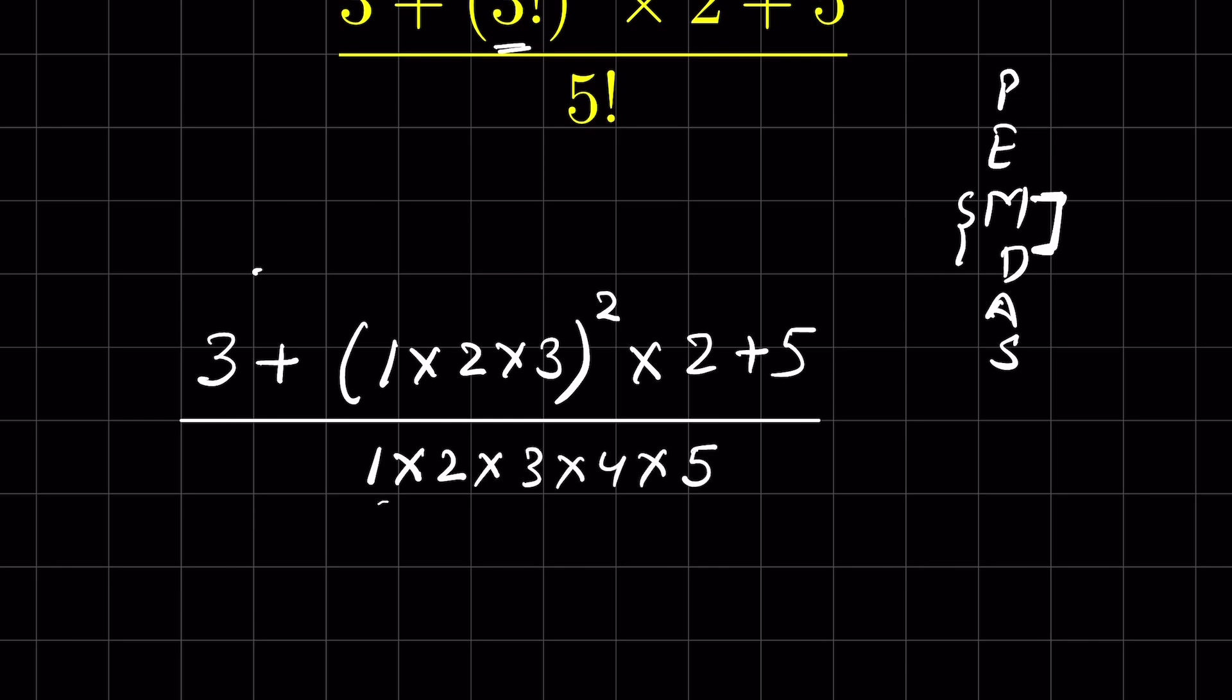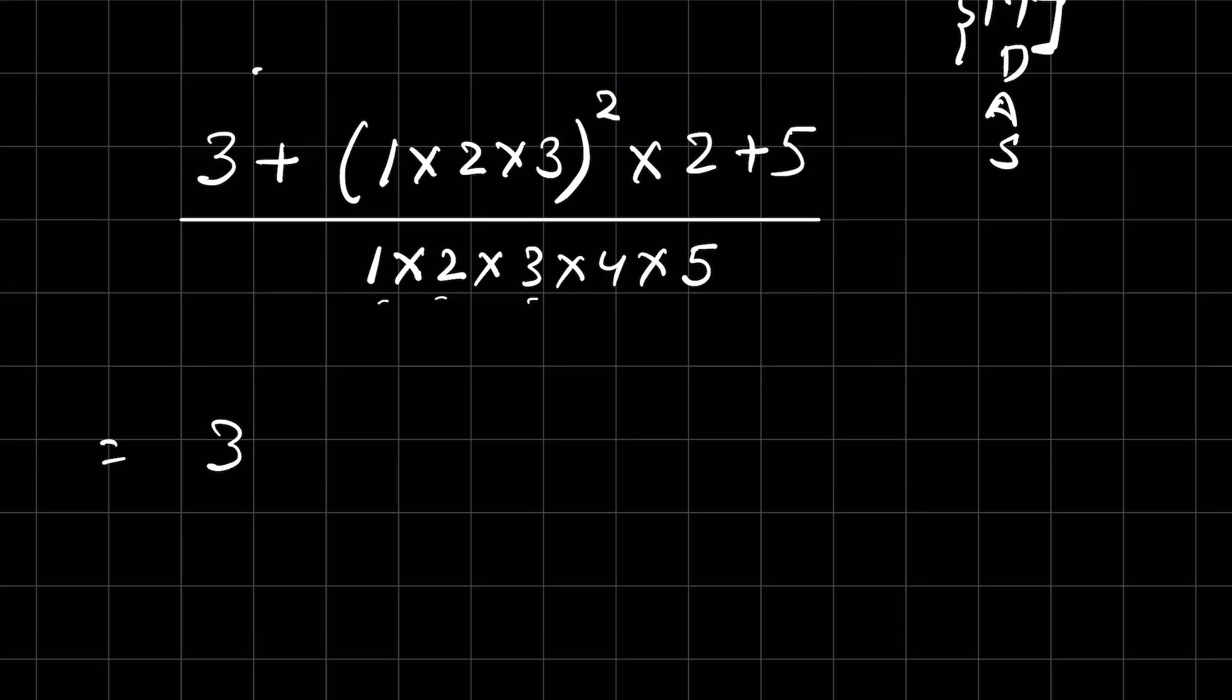Now this is 3 plus, and before addition or multiplication we will have to solve this exponent part. So 3 times 2 is 6, and 6 squared is 36 times 2 plus 5 upon 2 times 3 is 6.